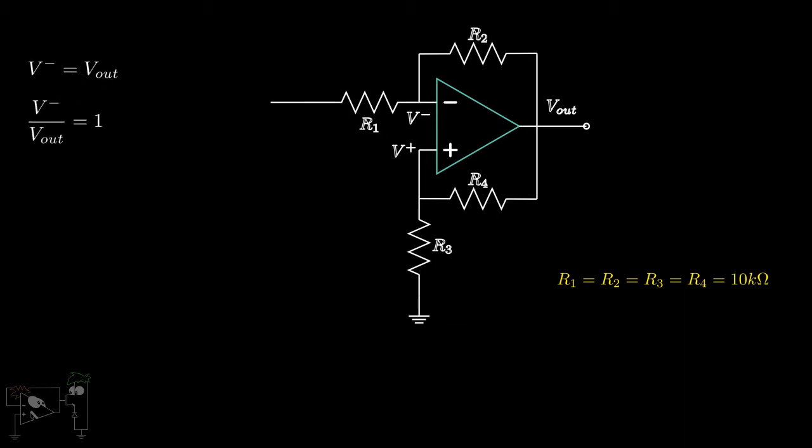For the positive terminal, R3 and R4 form a resistor divider circuit. Hence, V-plus upon V-out will be R3 upon R3 plus R4, or 1 by 2.